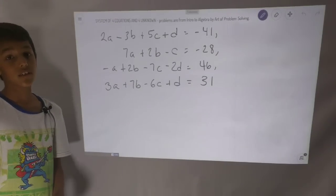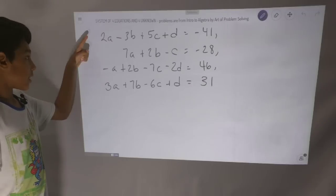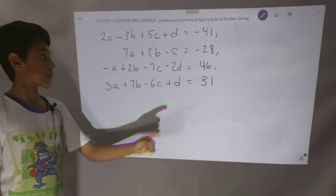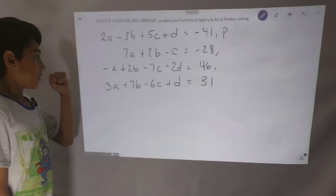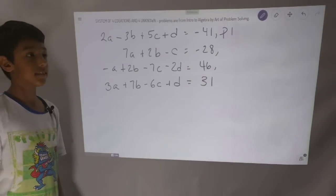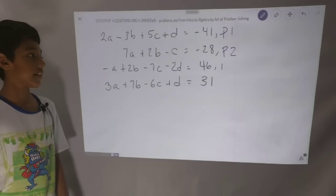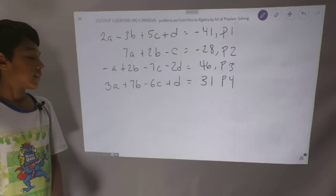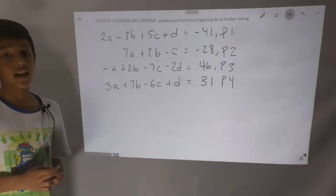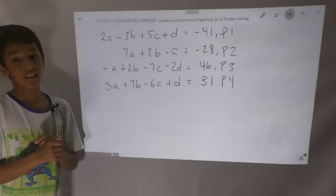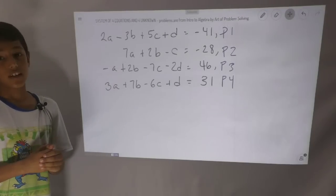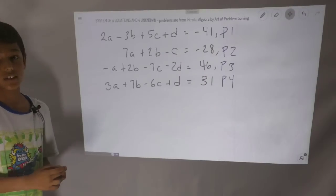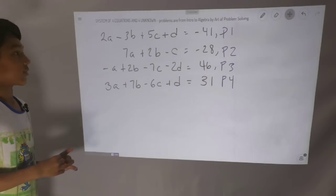So the first thing we do, so we don't get confused later, is label each of these equations. The first one is P1, the second is P2, the third is P3, and the fourth is P4. So now we don't get confused later on, because if we didn't have them labeled, we would get mixed up with which equation is which.